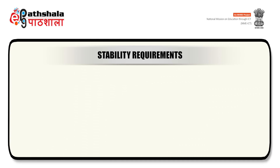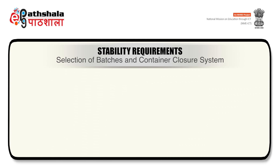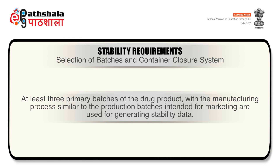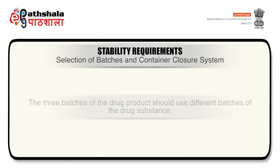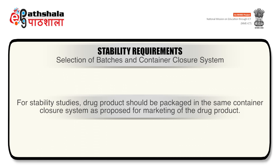Now we are talking about stability requirements. The guidelines for industry Q1A R2 define requirements for submission of stability data with drug applications in the EU, Japan and the United States. A selection of batches and container closure system: at least three primary batches of the drug product with the manufacturing process similar to the production batches intended for marketing are used for generating stability data. The three batches of the drug product should use different batches of the drug substance. Where possible, at least two batches should be pilot scale and the third batch can be of similar size.